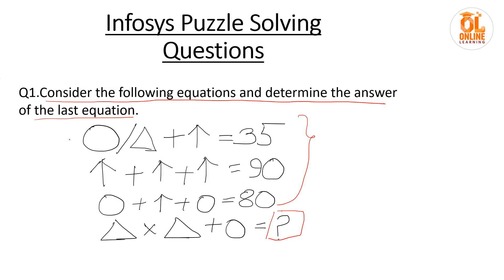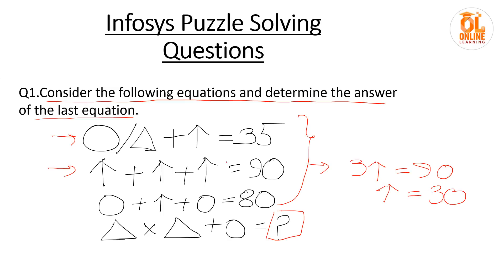If you see this, there are three different figures, so it will be difficult for you to find a value from this line. But here you can see all the figures are of the same type. So what you can do — three arrows equals 90, so one arrow will be how much? 30. So you have got the value of the arrow.